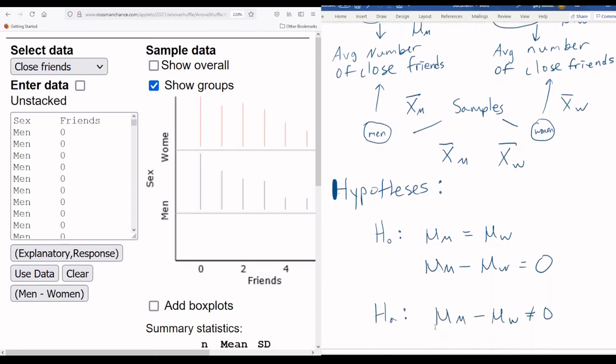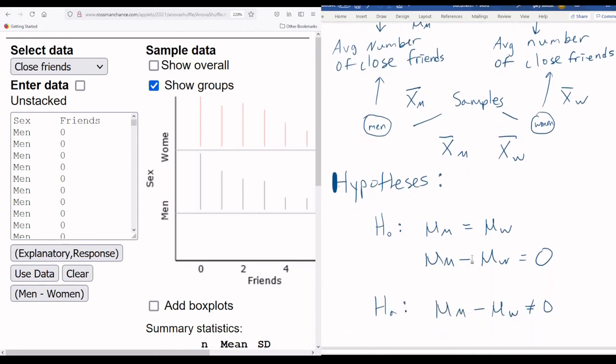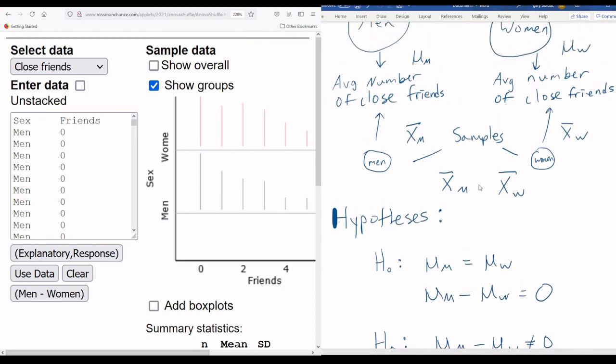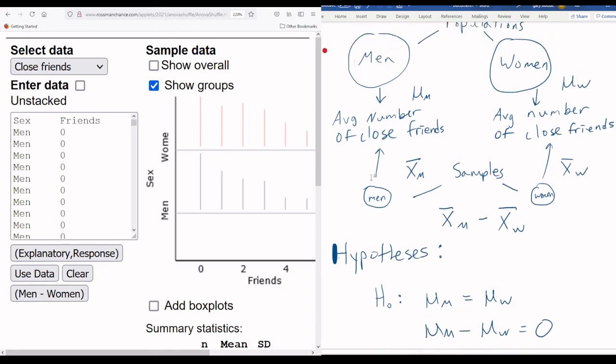Well, just look down here. What did I do to combine these into one number? I put a minus sign. Boom. That's our statistic. There you go. Take the average for your sample of men, take your average for your sample of women, and just subtract them. See what you get.